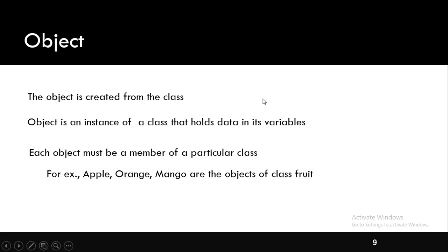Next, we will see what is an object. The object is created from the class. It is an instance of a class that holds data in its variables. Each object must be a member of a particular class. In this case, fruit is a class, and apple, orange, mango are members of this class.